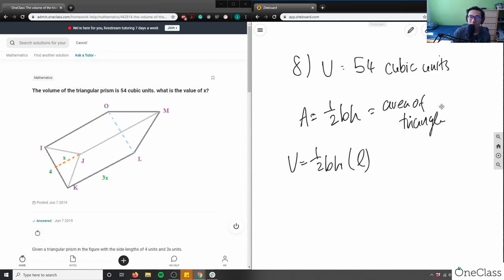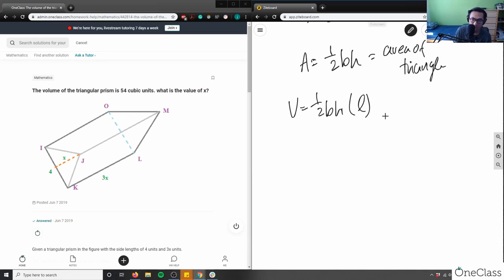And then I'm already given my volume, it's 54. So 54 equals half, and then I need base, height, and length here. So in this case, I have the base here is 4. So half times 4.